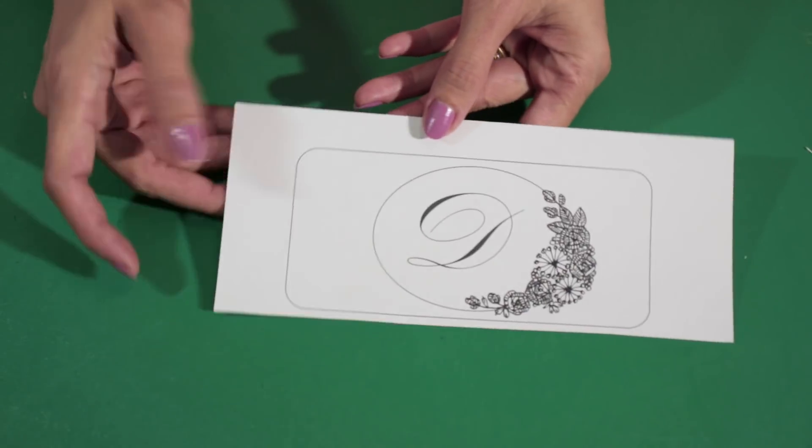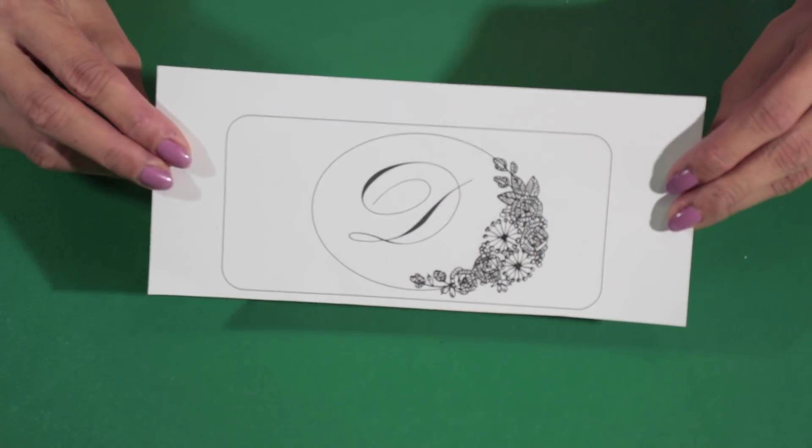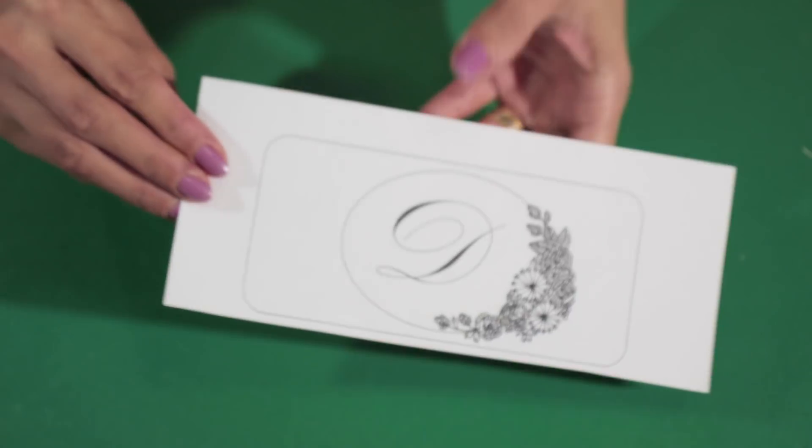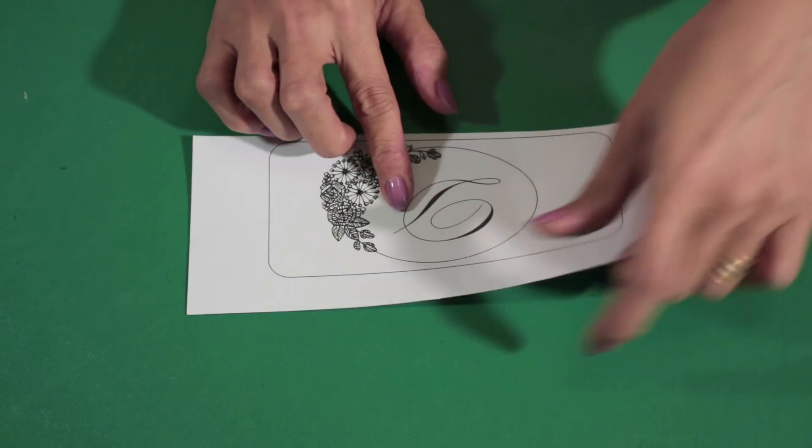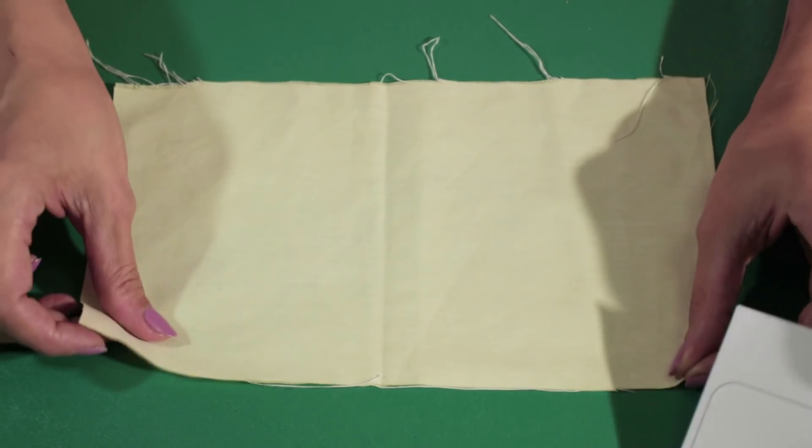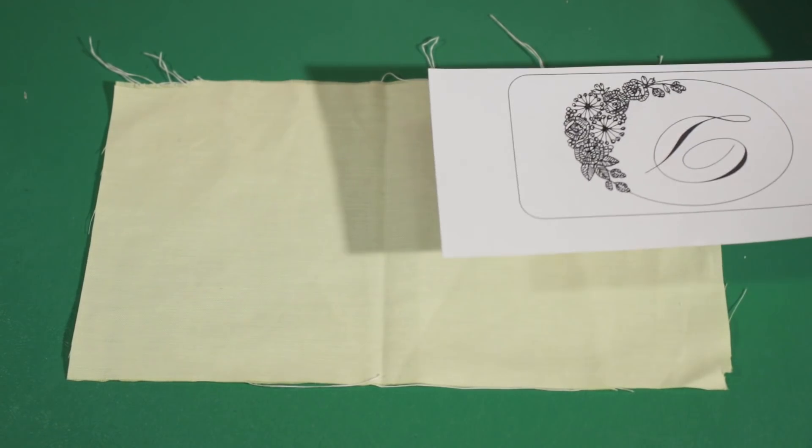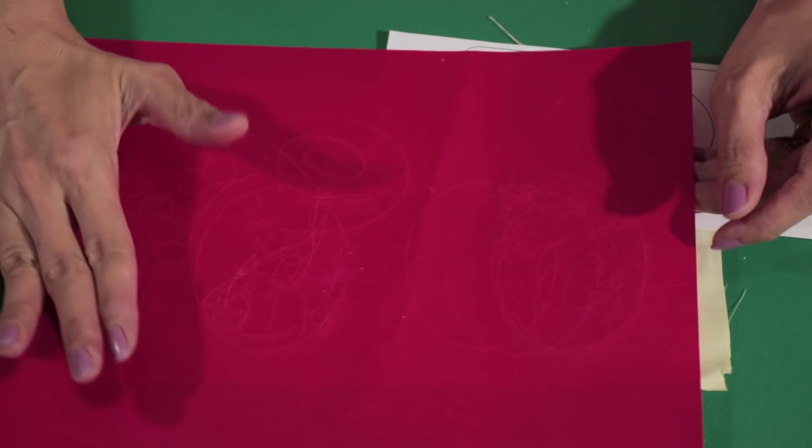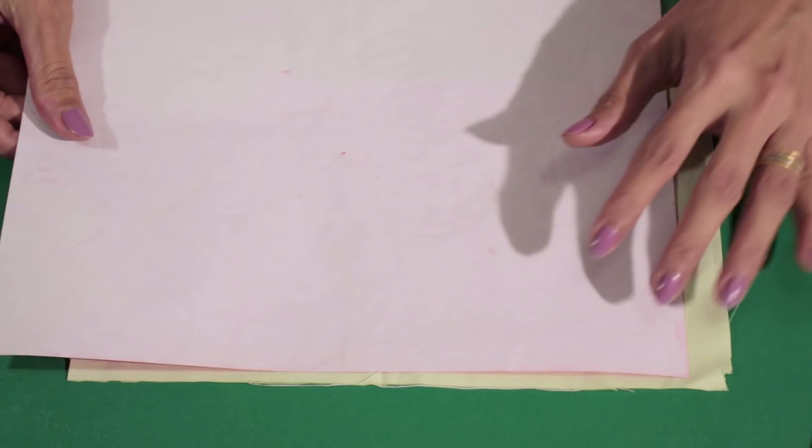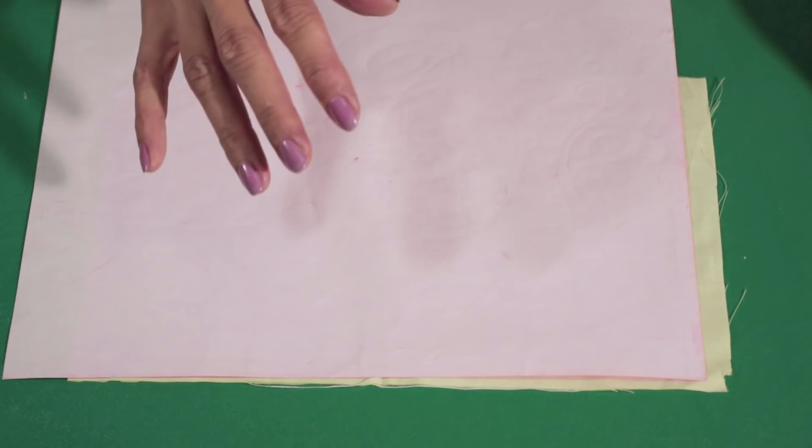Okay, now my pattern is ready. And next I'm gonna trace this embroidery pattern to my fabric. Here's a piece of fabric here. And I'm gonna use carbon paper, turn the color side on your fabric like this, and then put the pattern right in the middle.